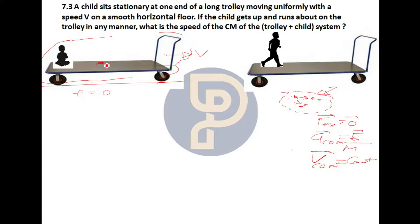Now, the child is sitting there and the child starts to run. When the child starts running, there is friction between the child and the trolley. The reaction acts back on the child. These two friction forces — on the child and on the trolley — are internal forces, because both the child and the trolley are members of the same system.